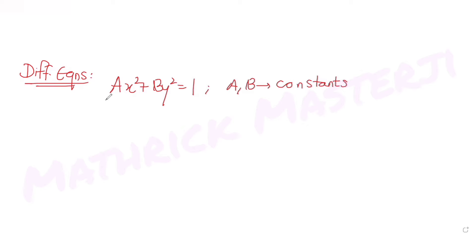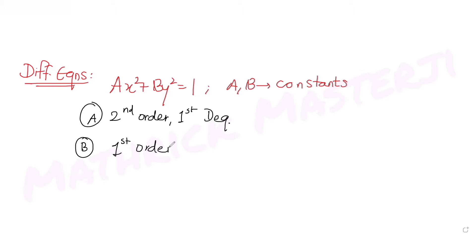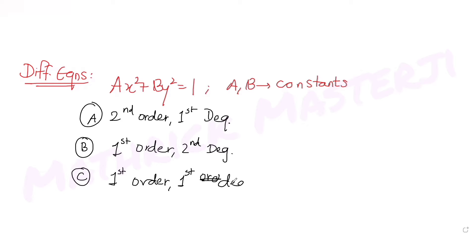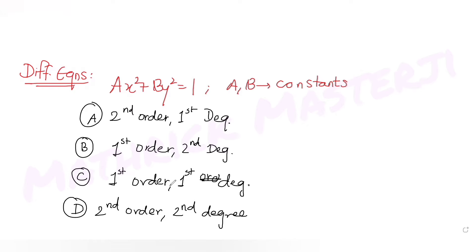We need to find the order and degree of this differential equation. The answer choices are: first option — second order and first degree; second option — first order and second degree; third option — first order and first degree; fourth option — second order and second degree. We need to figure out which is correct for the equation whose solution is ax² + by² = 1.